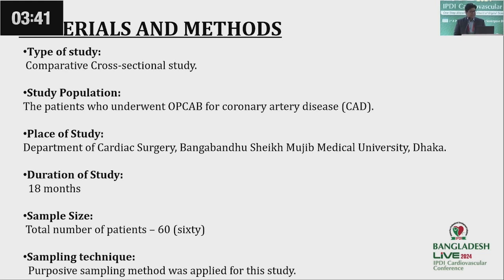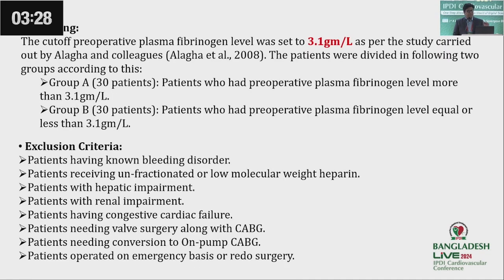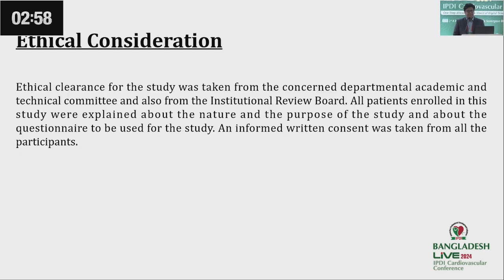This was a comparative cross-sectional study conducted in the Department of Cardiac Surgery, BSMU, over a duration of 18 months. Total number of patients was 60, and purposive sampling was applied. A cut-off value of preoperative plasma fibrinogen level was set at 3.1 grams per liter, and accordingly two groups of 30 patients each were created. Patients with known bleeding disorders, hepatic and renal impairment, congestive cardiac failure, those needing valve surgery along with CABG, conversion to on-pump CABG, emergency surgery, or redo surgery were excluded. Ethical clearance was obtained according to institutional protocol.